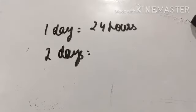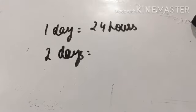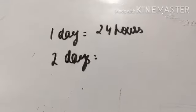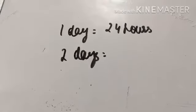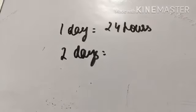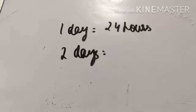When we have to convert the number of days, we will know that one day is equal to 24 hours. If we know that one day is equal to 24 hours, then we will know that two days is equal to how many hours.